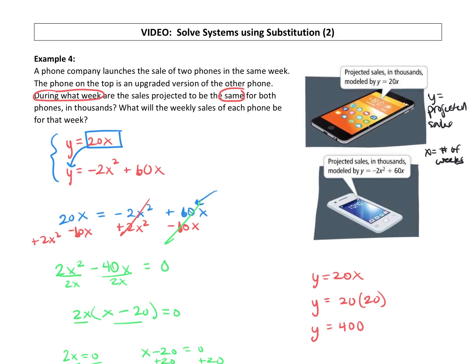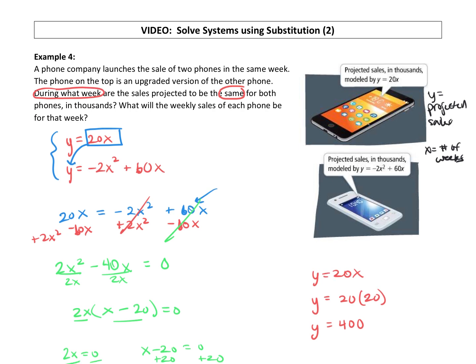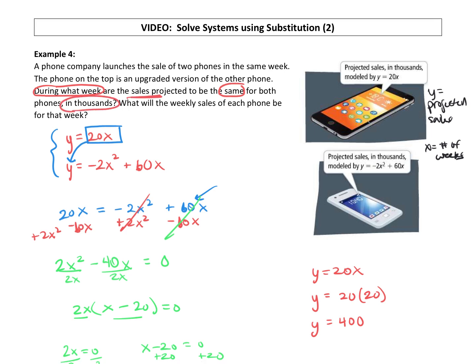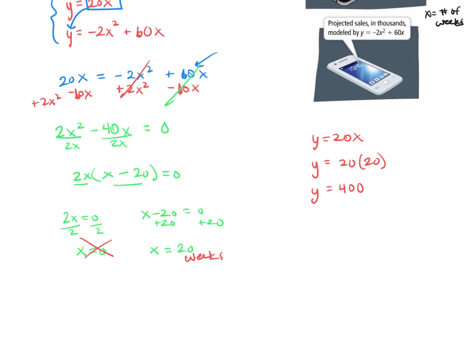Now they did say that the sales will be in thousands. So when I got that 400 for y, the projected sales are not $400. It's 400 times 1,000 because that's in thousands. So that is $400,000.